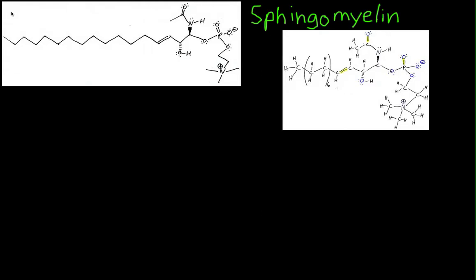Hello and welcome to this video where we will explore molecules using sphingomyelin as our test molecule. A little bit of background: sphingomyelin is a type of phospholipid, so we're going to find it in cell membranes, and it is especially prevalent in neuron cell membranes. Here I've drawn sphingomyelin two different ways — the skeletal model and a more filled-in model.